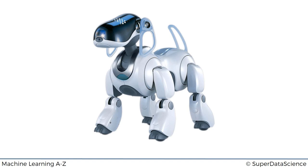Or you can implement a reinforcement learning algorithm that will train the dog to walk in a very interesting way. Basically it says: here are all the actions you can take — you can move your legs like this or like that — and your goal is to make a step forward. Every time you make a step forward you are given a reward, which is a one in the algorithm. Every time you fall over you're given a punishment, which is a zero. It will try all these random sets of actions, remember which ones led to a step forward, and repeat them more and more. Dogs like that can actually learn to walk.